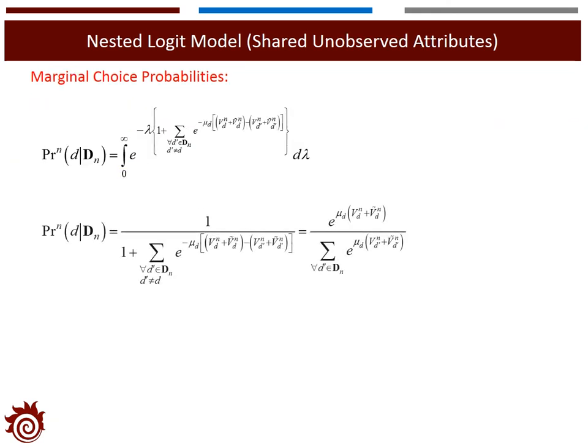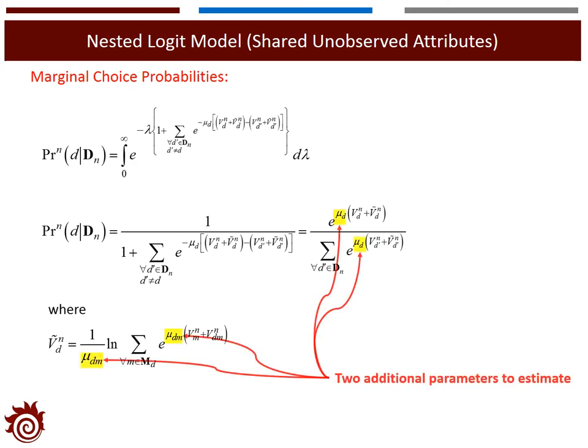Finally, we arrive at the equation for the marginal choice probability applicable for the nested logit model with shared unobserved attributes. This expression also contains a log sum term, but it is different from the log sum term defined previously. In addition, this expression contains two additional parameters, mu_d and mu_dm, which must be calibrated to implement the nested logit model.